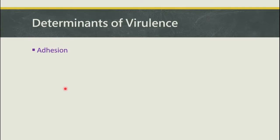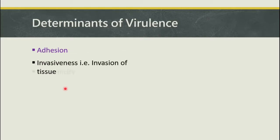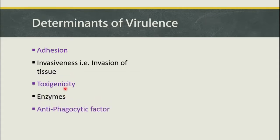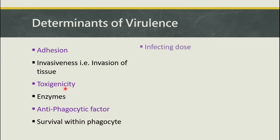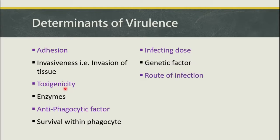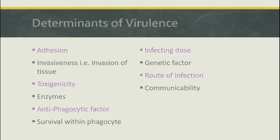Before that, we will recap once again. The determinants of virulence are: invasiveness, toxigenicity, enzymes, anti-phagocytic factor, survival within phagocyte, infecting dose, genetic factor, route of infection, and communicability.